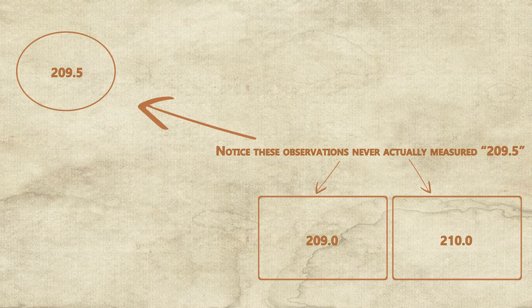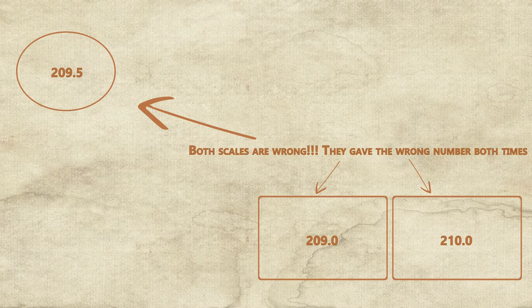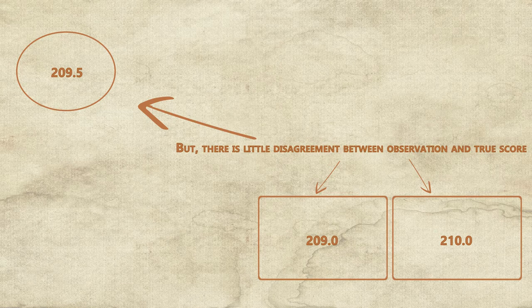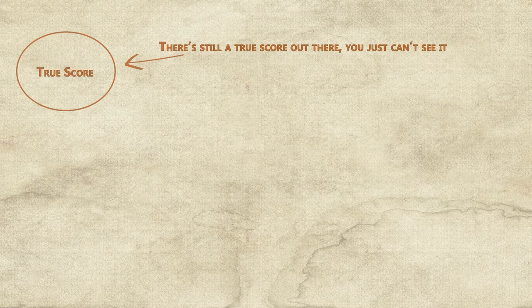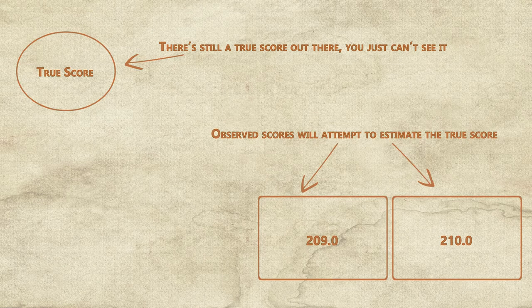That number 209.5, we never actually measured that correctly. That's that hidden value that we can never access completely accurately, but we got really close with those measures. So there's that real number that's hidden from view, 209.5. We can never actually see that number. And then there's the number that we get from the scale, which was either 209 or 210 in this example. It's close, but it's not perfect.